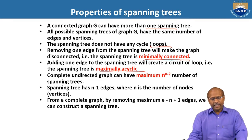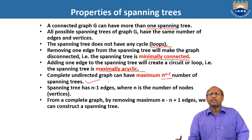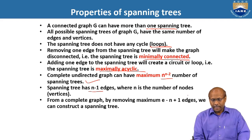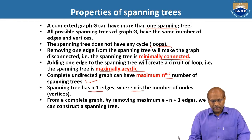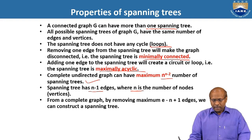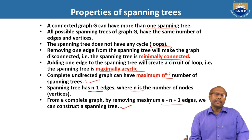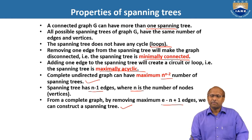Adding one edge to the spanning tree will create a cycle or circuit, making the spanning tree maximally acyclic. A complete undirected graph can have a maximum of n^(n-2) spanning trees. A spanning tree has n minus one edges, where n is the number of nodes — so if there are ten nodes, you will have nine edges. For a complete graph, by removing a maximum of e minus n plus one edges, we can construct a spanning tree.